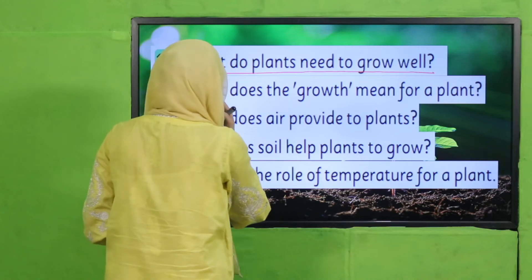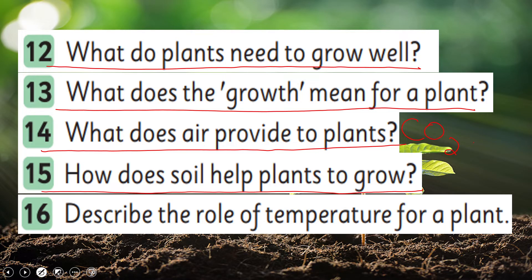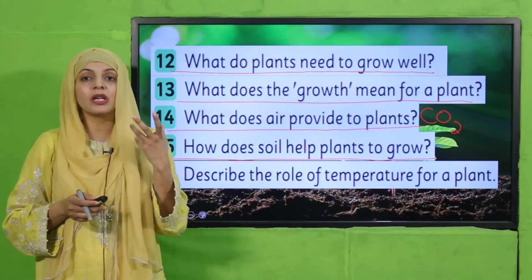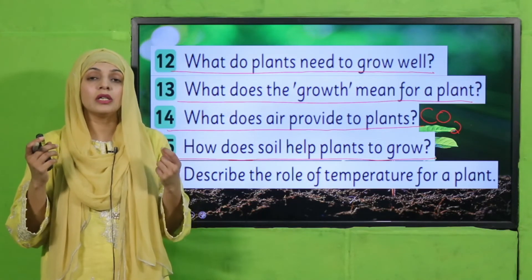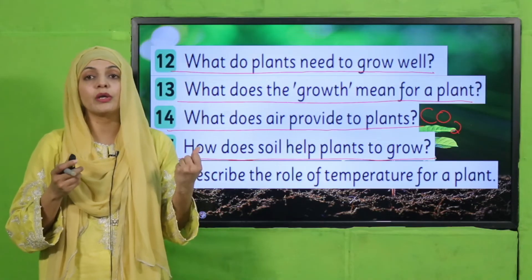What does growth mean for a plant? To grow tall, to grow healthy — this is what is meant by the growth of a plant. What does air provide to the plant? It provides carbon dioxide. How does soil help plants to grow? Because it has nutrients, all the nutrients are absorbed by the water into the roots and then transferred to the plant to grow well and healthy. Describe the role of temperature for a plant — appropriate temperature is needed for the seed to grow into a plant, aur isi tarike se har plant ko proper temperature ki zaroorat hoti hai to grow well.